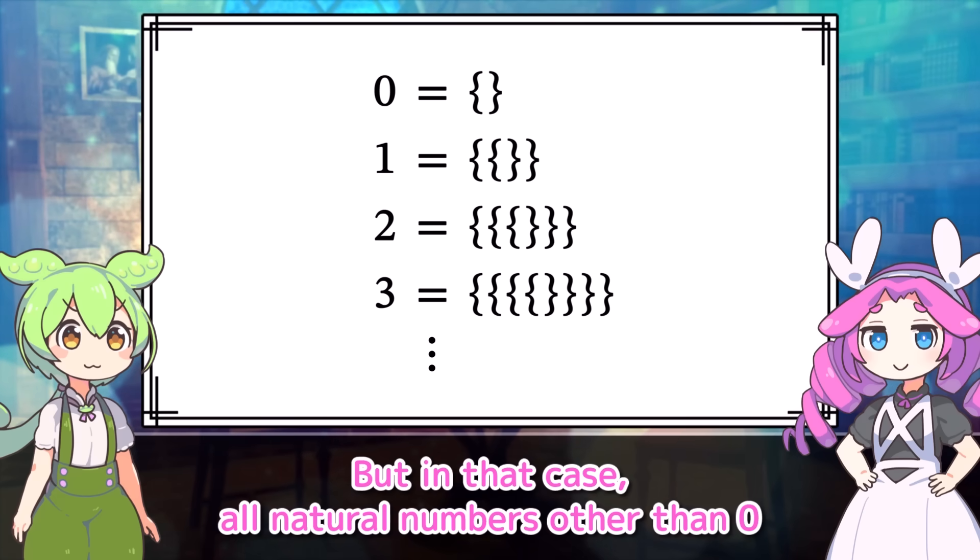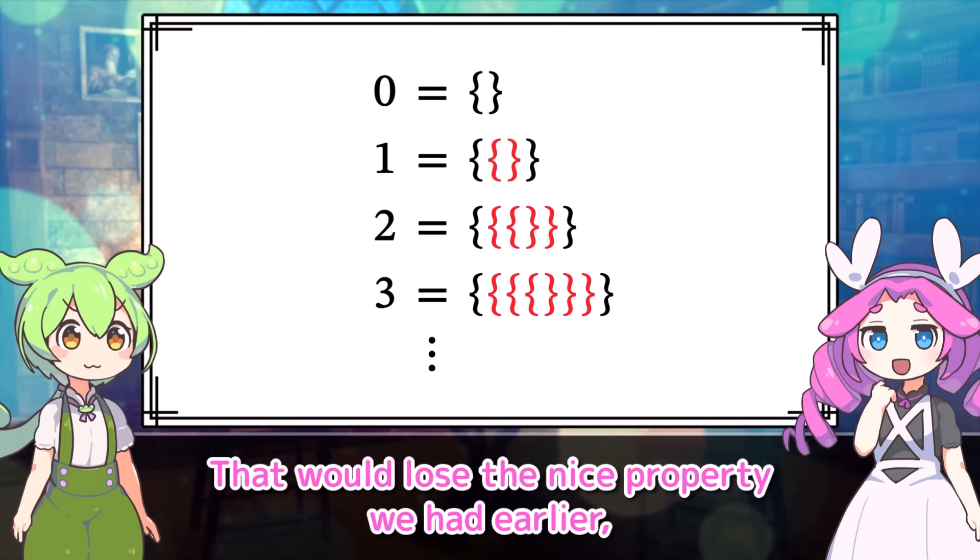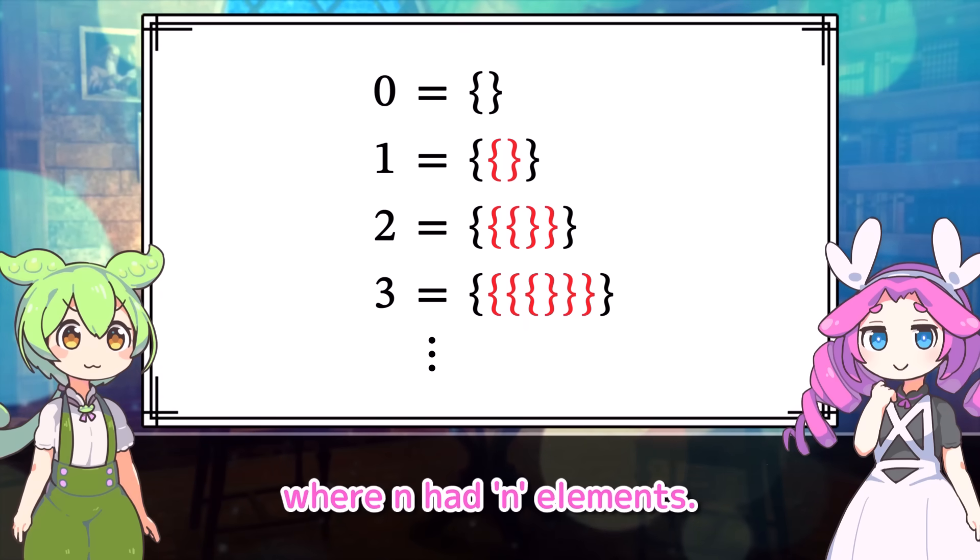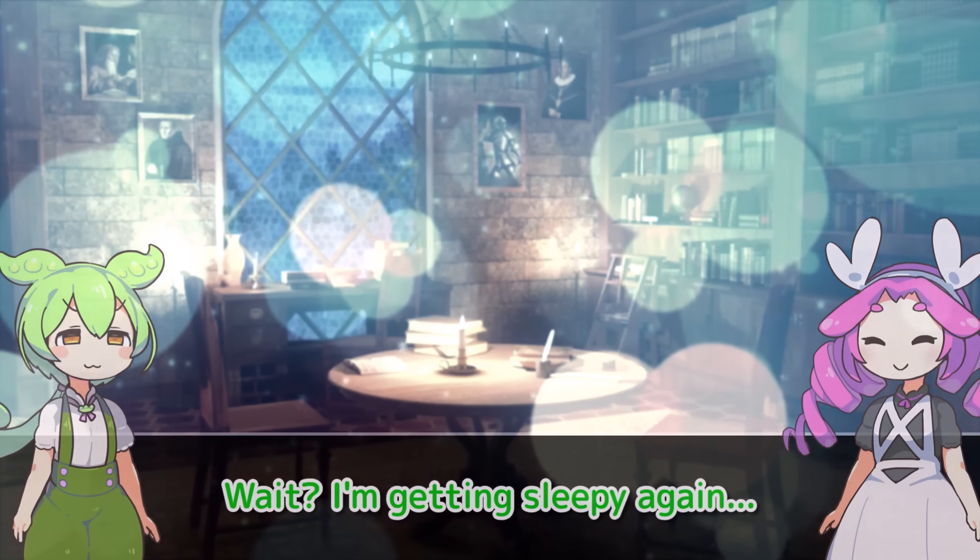But in that case, all natural numbers other than zero would just be sets with one element each. That would lose the nice property we had earlier, where n had n elements. You're right. I kind of get why this method is considered standard. Wait, I'm getting sleepy again.